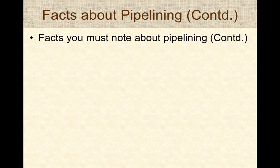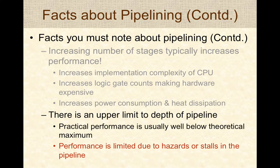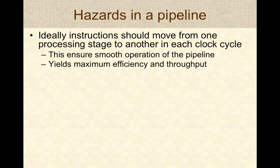More facts: increasing the number of stages typically increases performance, but also increases CPU complexity, requiring more hardware, which increases power consumption and heat dissipation. There is an upper limit to pipeline depth, and practical performance from deep pipelines is well below the theoretical maximum. Performance is also significantly limited by hazards or stalls in the pipeline.